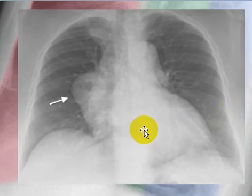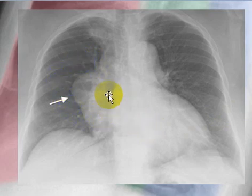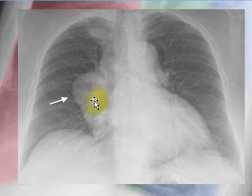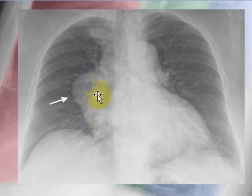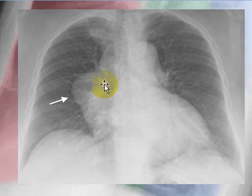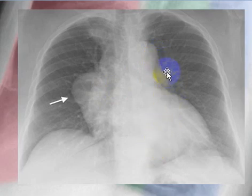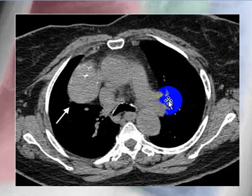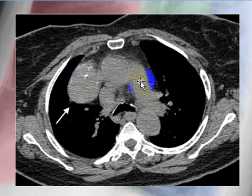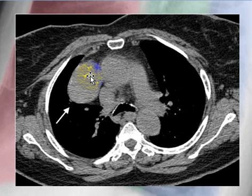Here we see a patient with a right mediastinal mass, and we can see the hilar vessels through that mass on the right side. So the mass is either located anterior or posterior to the hilum. But here we have another sign: the mass is silhouetting with the heart, so the mass is located in the anterior mediastinum. We also have some bulging of the aortic line. On CT scan, the mass is confirmed in the anterior mediastinum, has some calcification, and it proved to be a malignant thymoma.